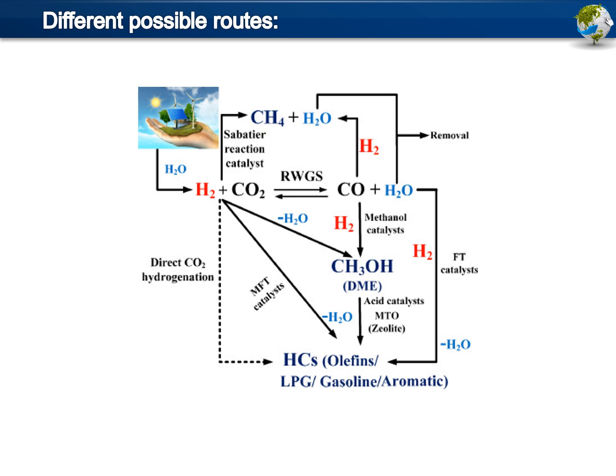CO2 can be hydrogenated into hydrocarbons by either direct or indirect routes. The direct route is described as the combination of the reduction of CO2 to CO via the reverse water-gas shift (RWGS) reaction, followed by the subsequent hydrogenation of CO to hydrocarbons using the Fischer-Tropsch synthesis reaction. So the direct route is the combination of the RWGS reaction and the Fischer-Tropsch reaction.